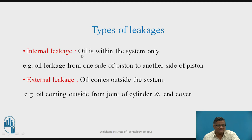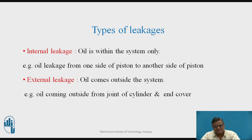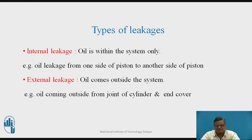You can think of the piston diameter being lesser than the inner diameter of the cylinder. In that case, oil will be capable of moving from one place to another, from one side to the other side of the piston. Then there is external leakage, where the oil comes outside the system — for example, at the joint between the cylinder and the end cover, the oil comes outside from that particular joint. That is called external leakage.